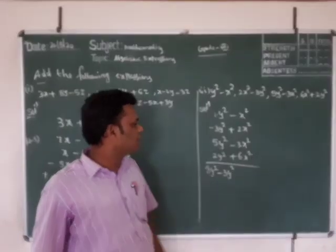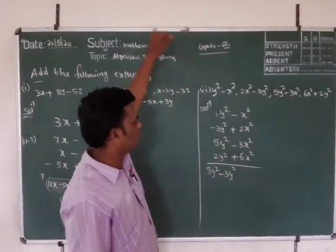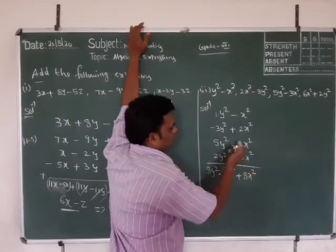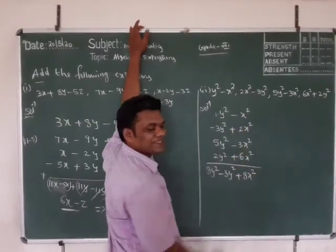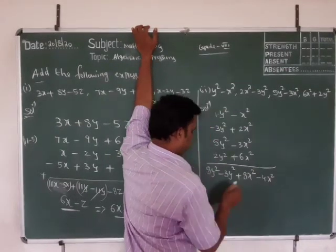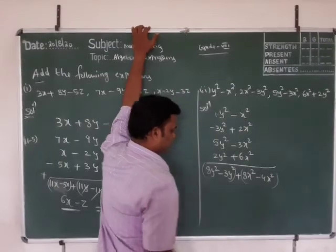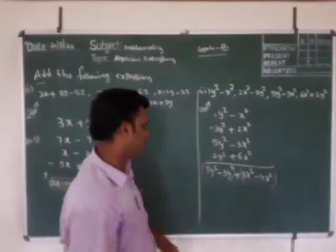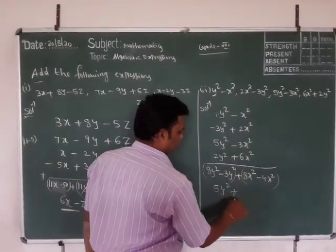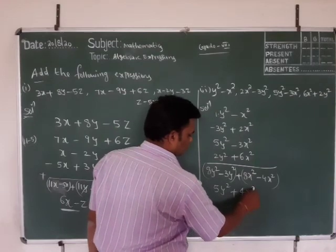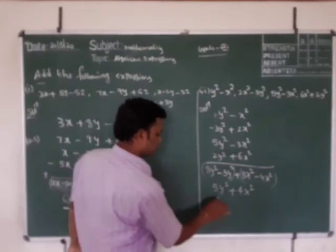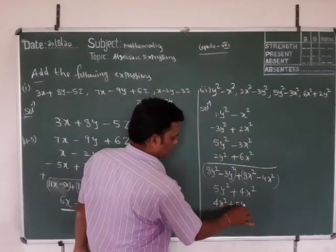So 8y squared minus 3y squared. Now: minus 3x squared minus x squared is minus 4x squared. And 8y squared minus 3y squared is 5y squared. Therefore our answer is 4x squared plus 5y squared.